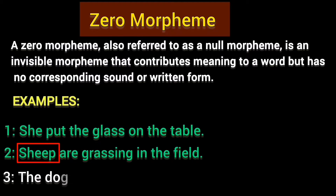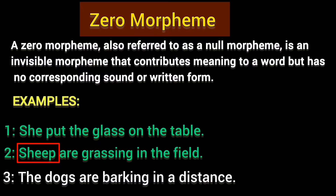There are numerous words which have a separate form or sound for plurality. For example: 'The dogs are barking in the distance.' Look at the noun 'dogs.' This noun also has two morphemes: 'dog,' and for plurality the separate morpheme '-s' has been used. You can see this morpheme has a separate written form and a separate sound. But in a zero morpheme, there is no separate sound or written form. Therefore, it is called a zero morpheme.